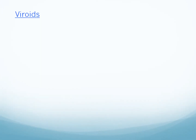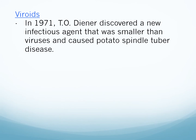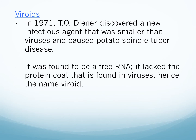Next we move on to viroids. In 1971, T.O. Diener discovered a new infectious agent that was smaller than viruses and caused potato spindle tuber disease. This infectious agent was found to be a free RNA — it lacked the protein coat found in viruses. Hence the name viroid. Viroids have RNA as the genetic material but do not have any protein coat called capsid.